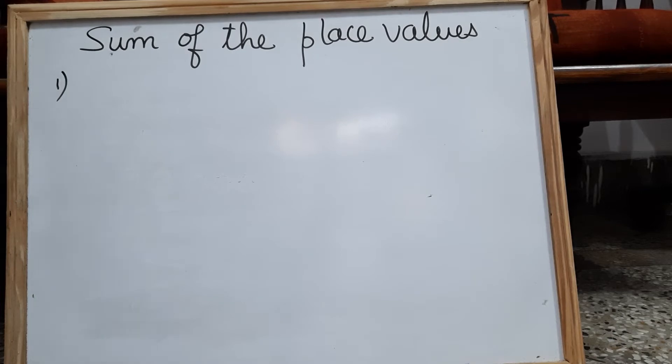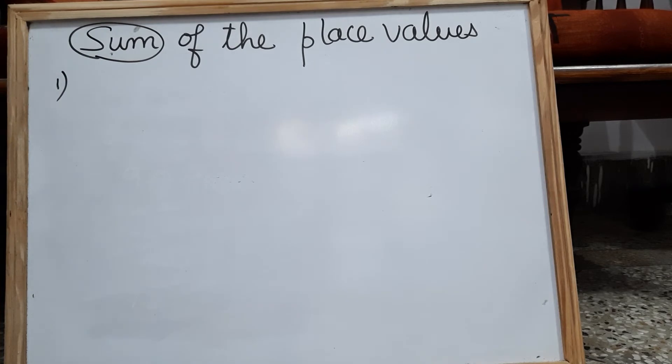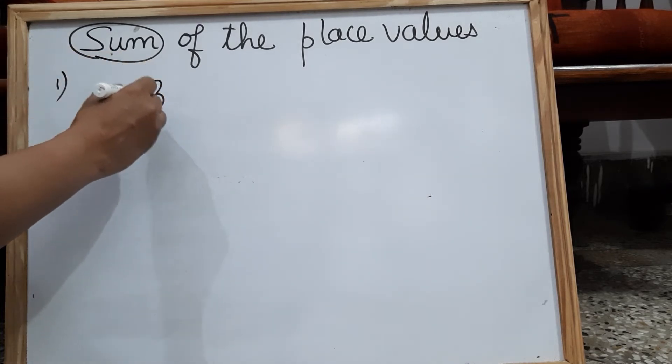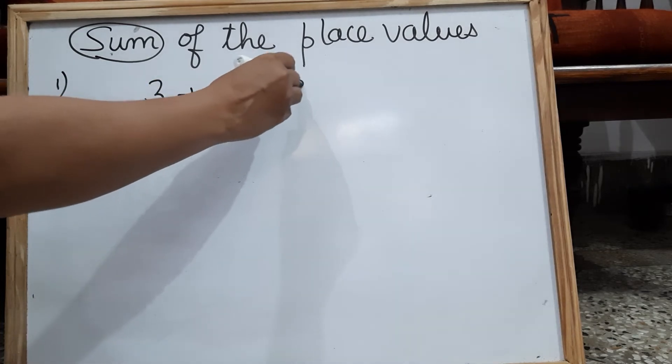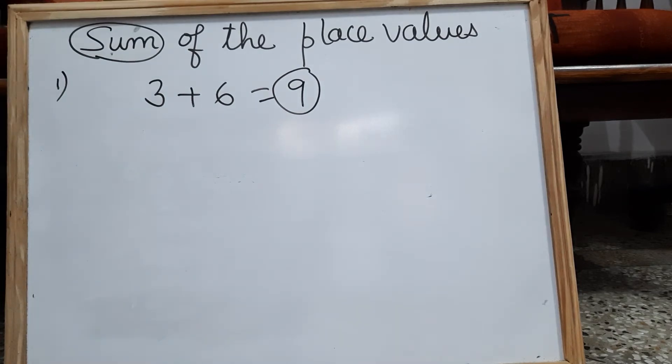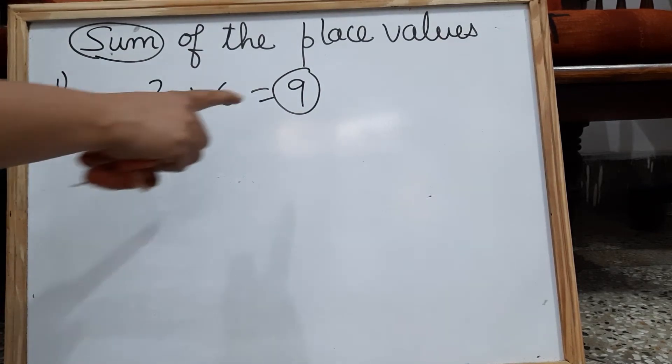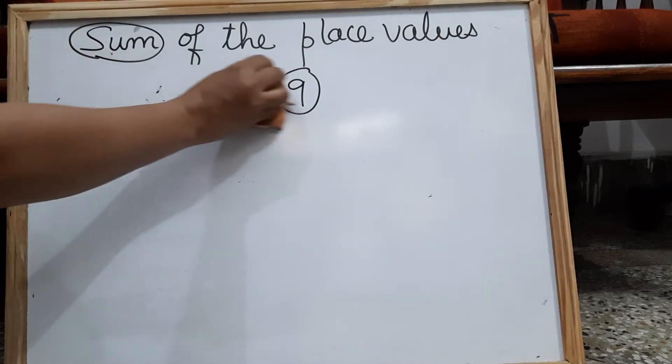Now here, sum. What is sum? Sum is the result obtained after adding the numbers. Suppose I am adding 3 and 6. What I get the result? 9. So 9 is sum of 3 and 6. The result obtained after adding the numbers is called sum.